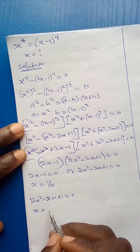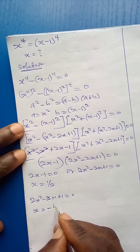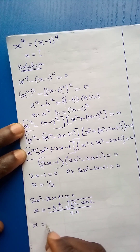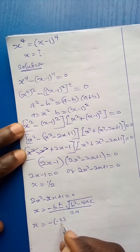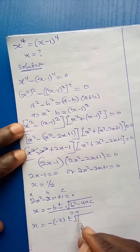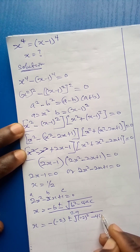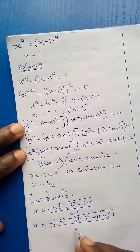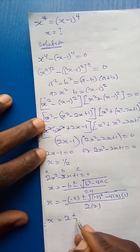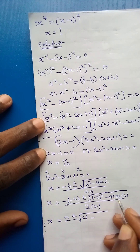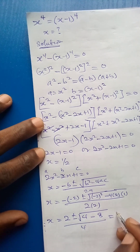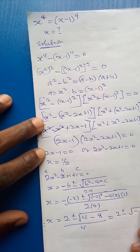Solving using the quadratic formula: x equals minus b plus or minus the square root of b squared minus 4ac, all over 2a. Here a equals 2, b equals minus 2, and c equals 1. So x equals 2 plus or minus the square root of 4 minus 8, all over 4. That gives 2 plus or minus the square root of minus 4, all over 4.